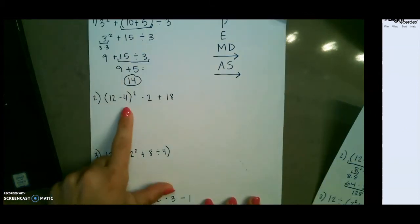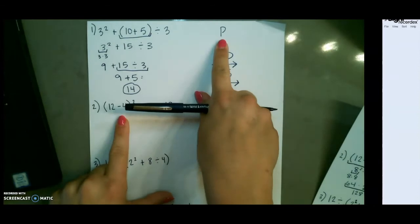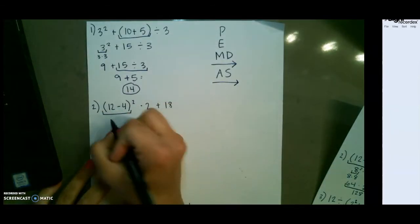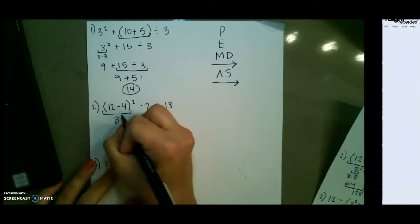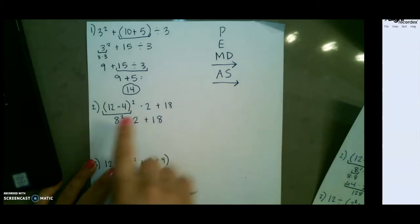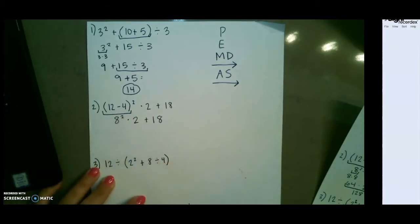For our second example, we want to start with parentheses. So 12 minus 4 is 8. Don't forget to bring down the exponent. I see people forget that all the time. We have not completed the exponent yet.